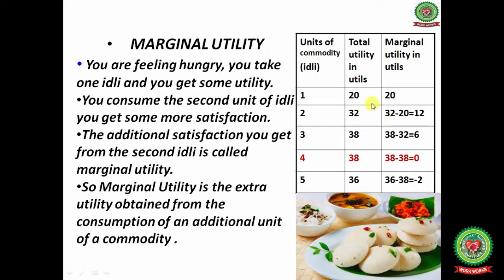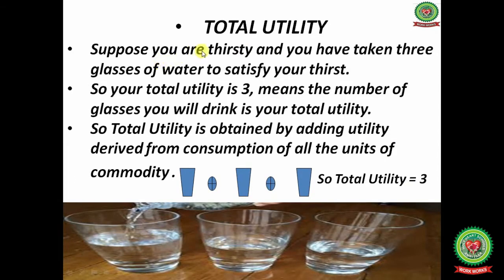Marginal utility is the extra utility obtained from the consumption of an additional unit of a commodity. From the first unit of idli, total utility is 20 and marginal utility is also 20. When you take the second idli, total utility increases from 20 to 32. So marginal utility equals 32 minus 20, which gives you 12.